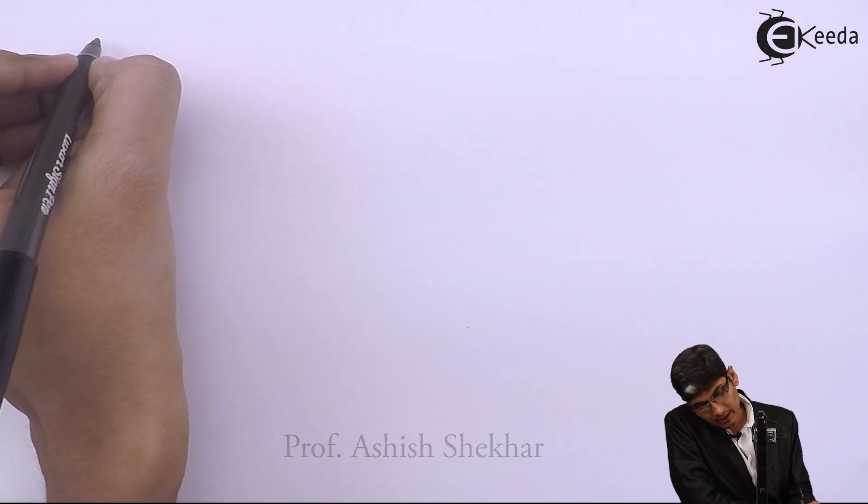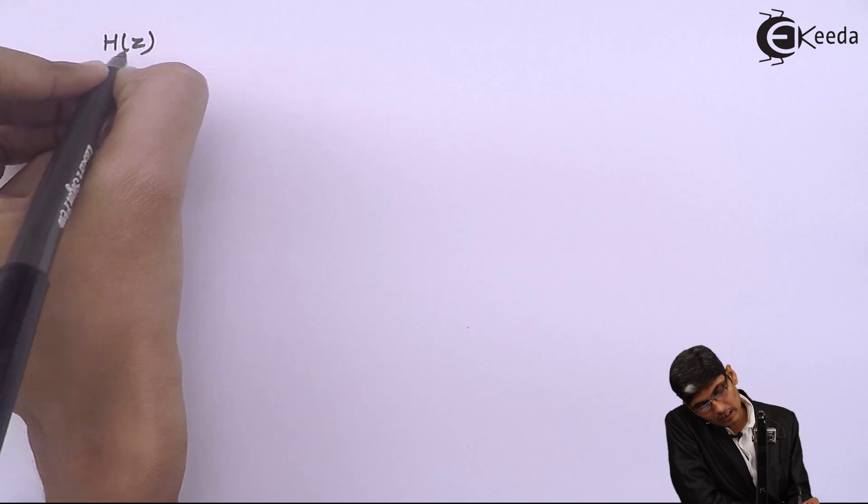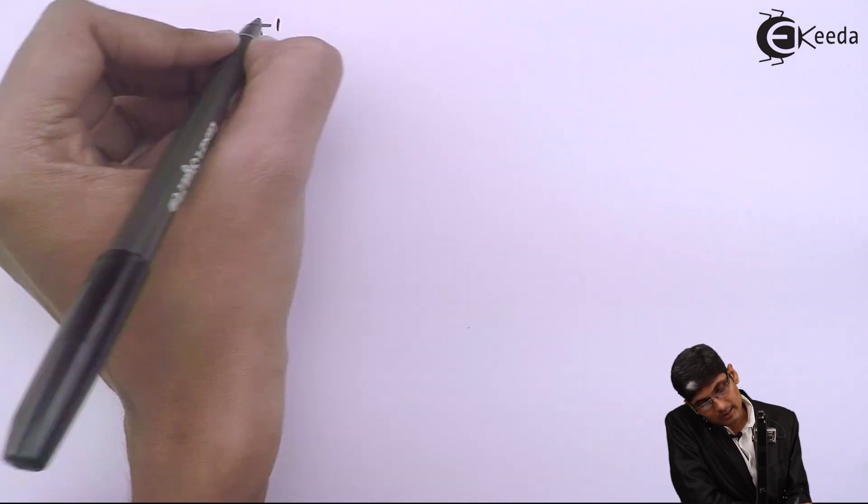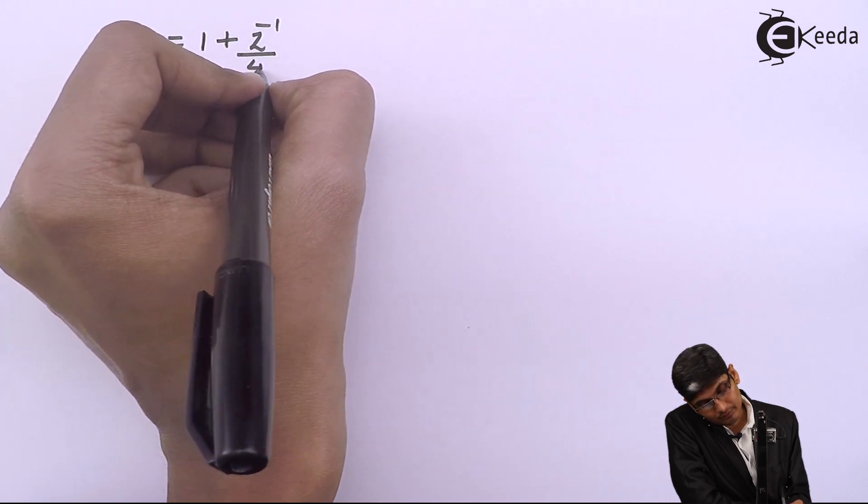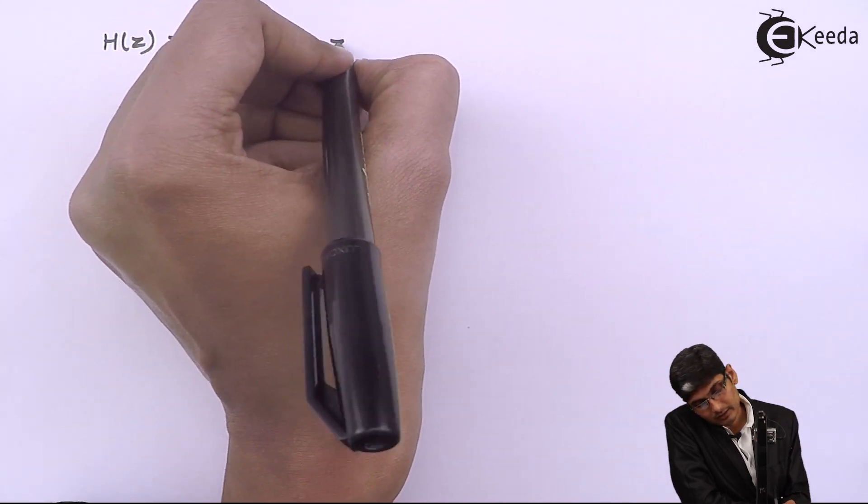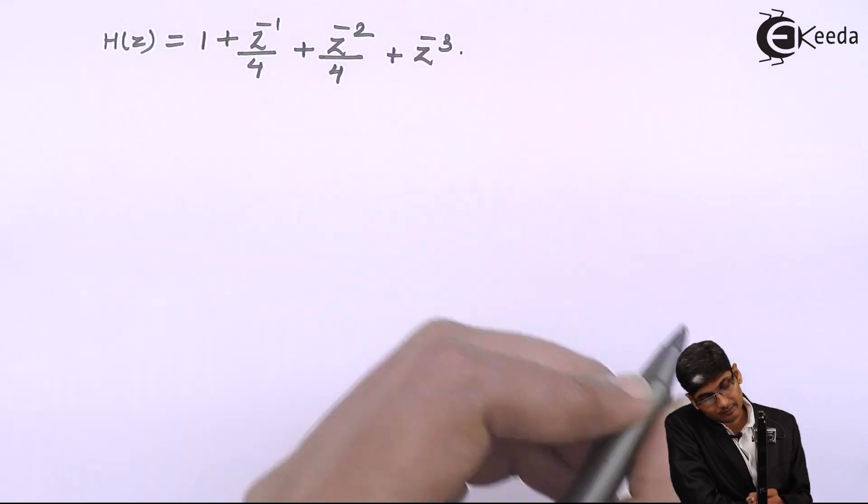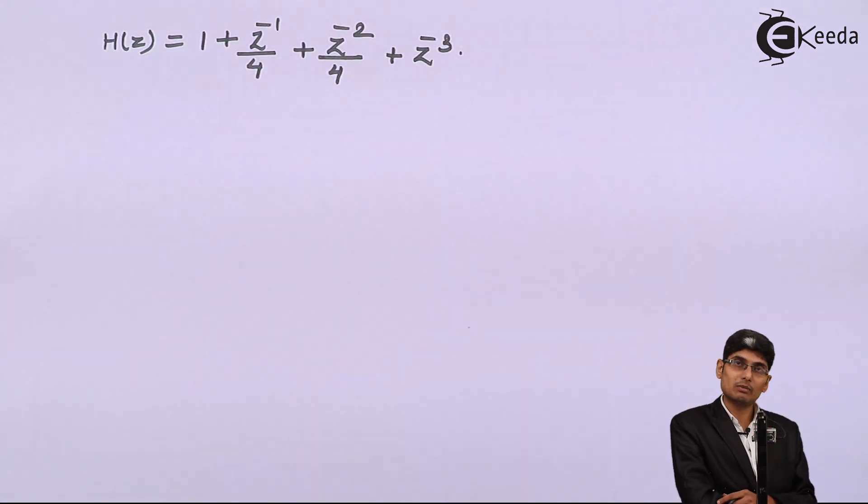So the problem for today we will take up is H of Z equals to 1 plus Z inverse by 4 plus Z raise to minus 2 by 4 plus Z raise to minus 3. That is a given problem to us.